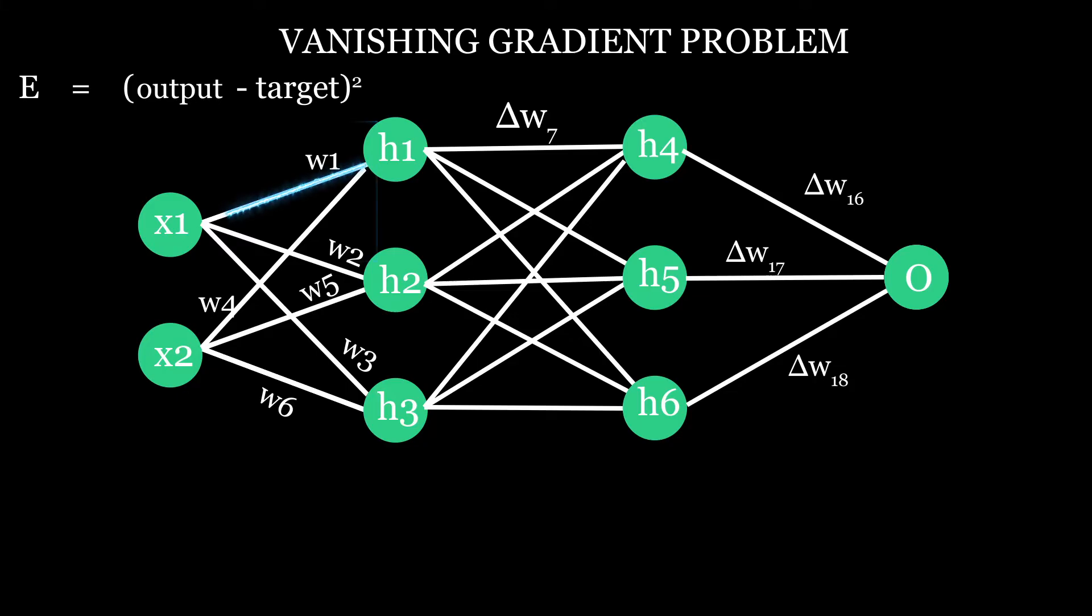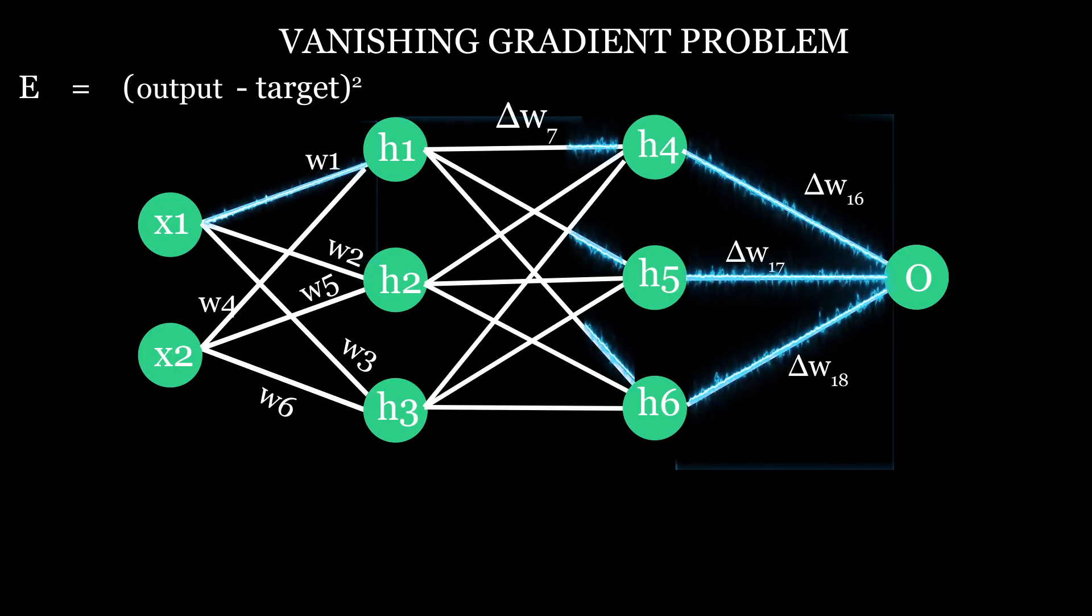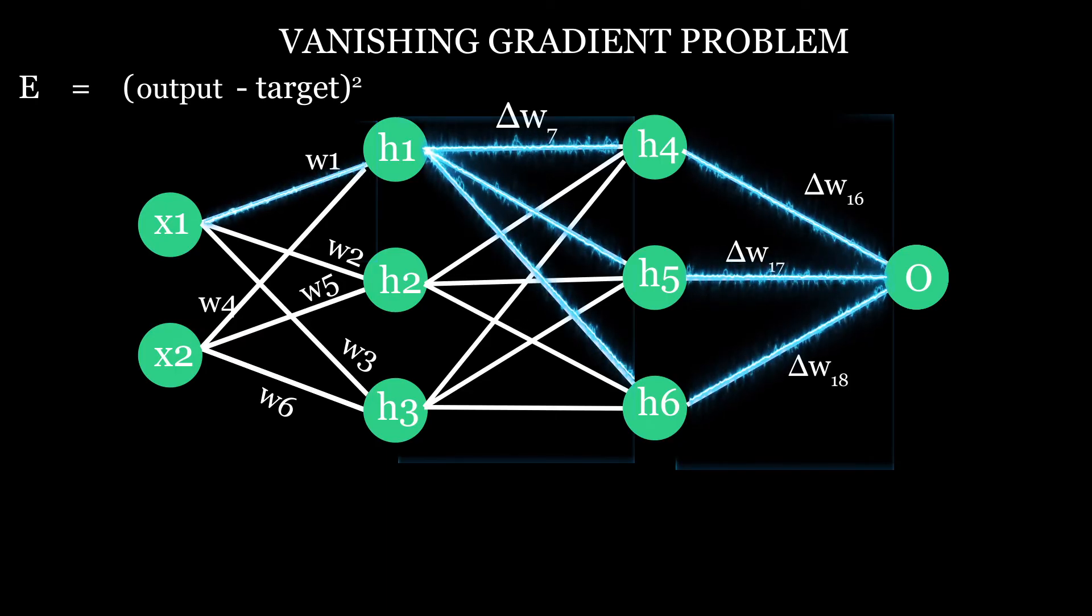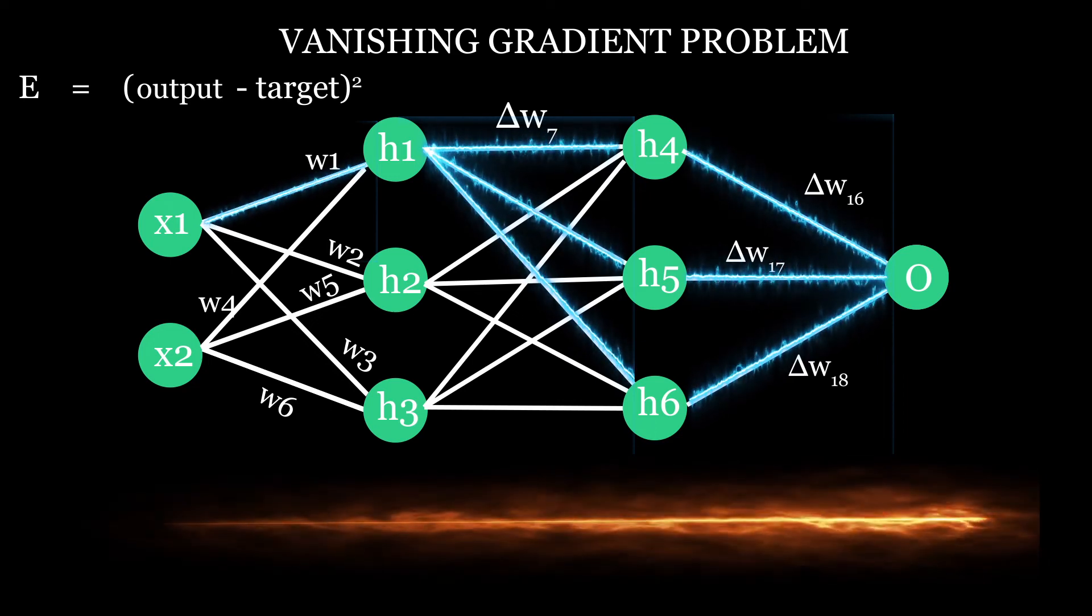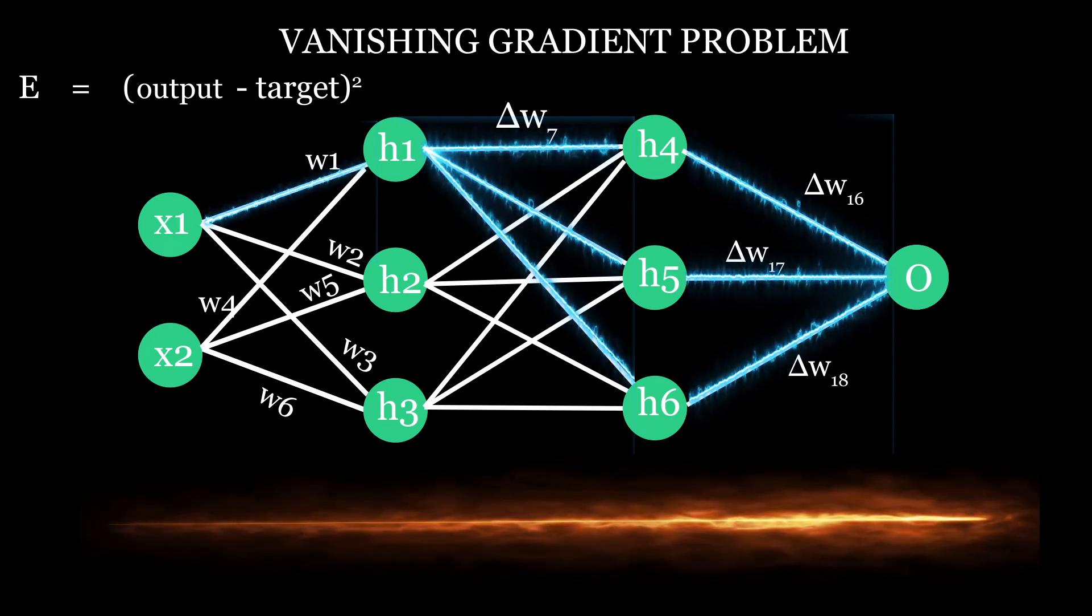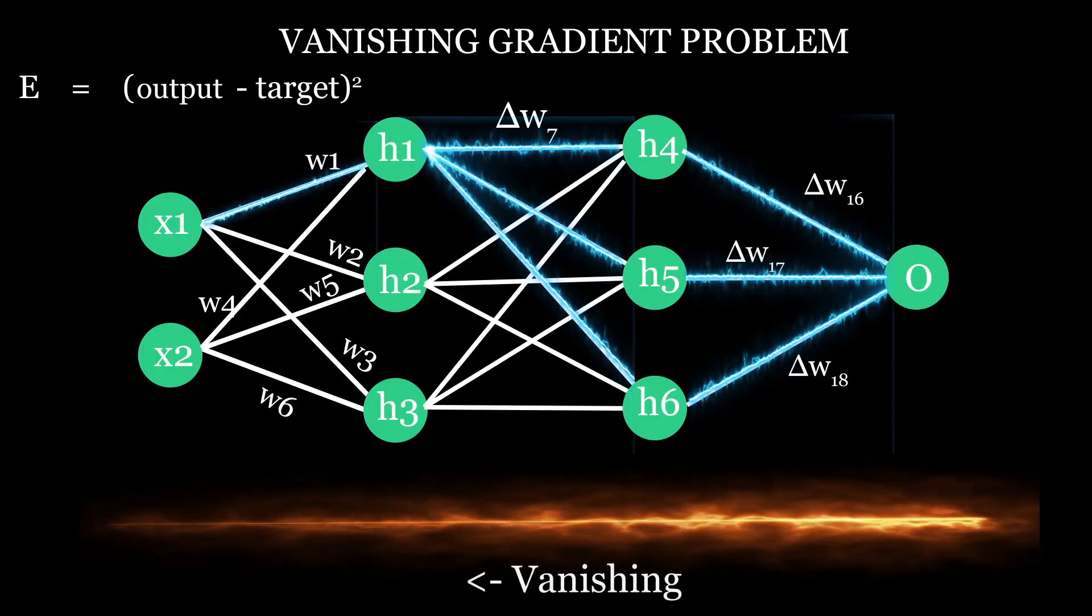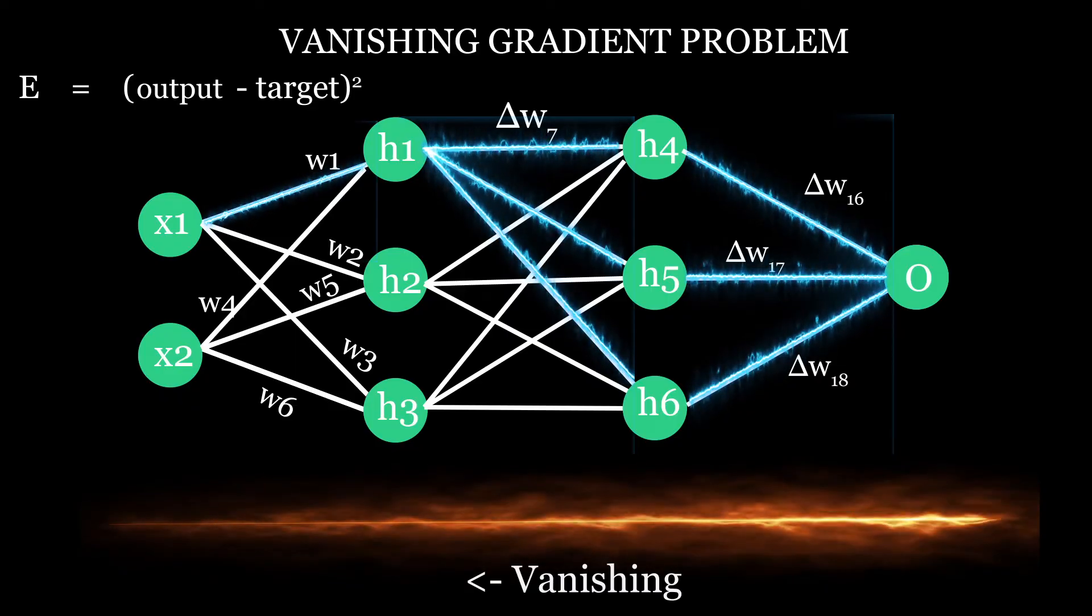And as you move backward for calculating gradient at this layer, you'll have to consider all the changes from output to this layer, and as you start going backward, the gradient will become smaller and smaller. And hence you can say that the gradient starts to fade or the gradient is vanishing, and this is how the vanishing gradient problem occurs in a deep neural network.